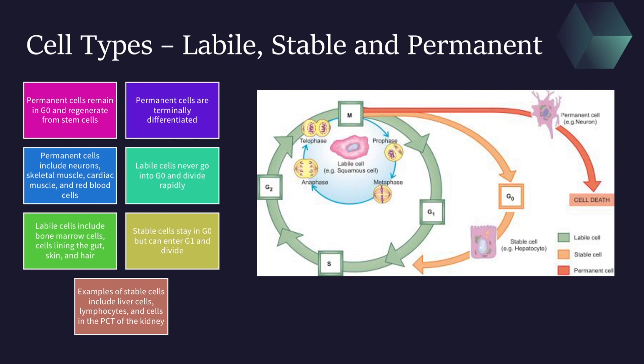Examples of permanent cells include neurons, as well as skeletal muscle, cardiac muscle, and red blood cells. As a brief reminder, the G0 phase is a resting phase in which the cell is neither dividing nor preparing to divide, and it is essentially a stage considered outside of the cell cycle.